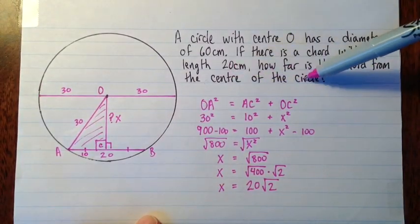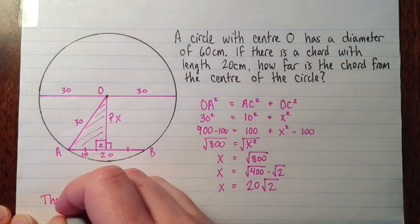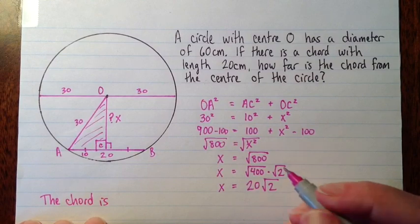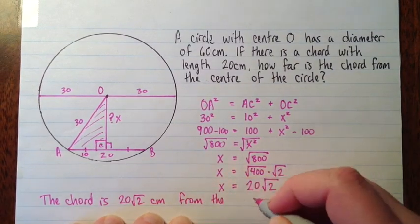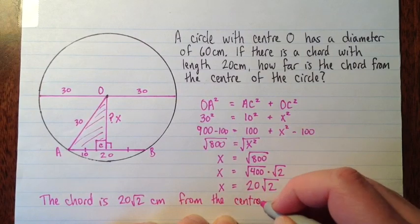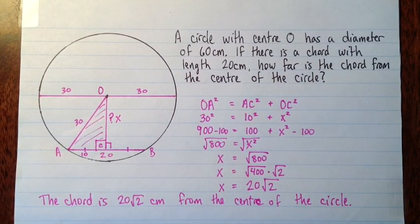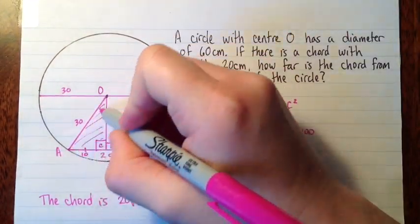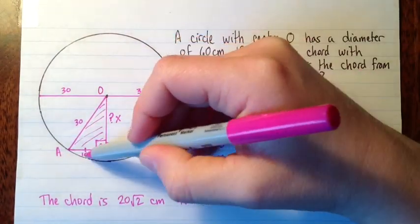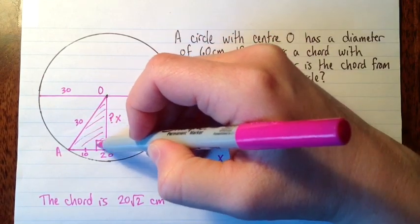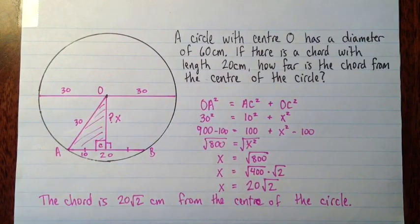So our question was to find how far the chord is from the center of the circle, and that's X. So the chord is 20 root 2 centimeters from the center of the circle. That's it. So just remember, usually with these problems you'll have to draw in a radius somewhere. And usually if you go from the center out to the edge of a chord, that's often useful. And remember we have a theorem that says if a line goes through the center of the circle and is perpendicular to a chord, then it bisects that chord. So that was what let us know that this 20 was 10 here and 10 here. Good luck! Thank you.